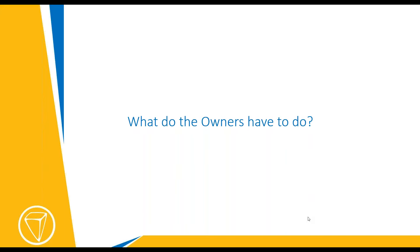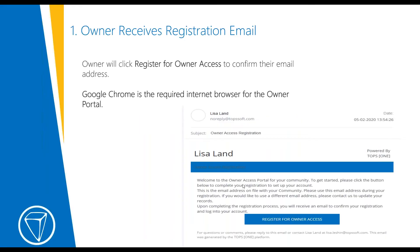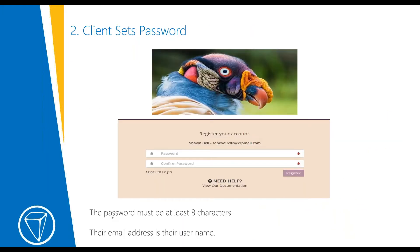After that, the owners will get an email that says to register for their owner access, and it looks like this. They do need to be on Google Chrome, just like you're on Google Chrome when you use TOPS One. They would simply click on 'Register for Owner Access' in the email they receive and it takes them directly to your website.